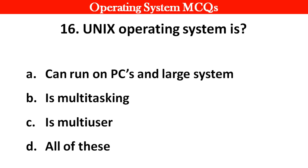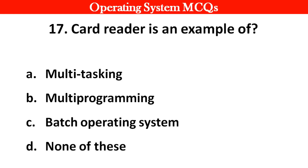Next question: Unix operating system is: Options: A. Runs on PCs and large systems. B. Multitasking. C. Multi-user. D. All of these. Right answer is option D: All of these.